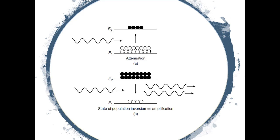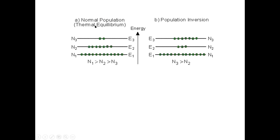In normal conditions, the number of electrons at the ground state is more than the number of electrons in the excited state. When the system encounters external photons of suitable energy, a photon is absorbed by an electron, which then makes a transition to the higher energy state. When the number of electrons at excited states is sufficiently large, the incident photon stimulates the emission of phase-coherent photons. This is the normal population in thermal equilibrium.